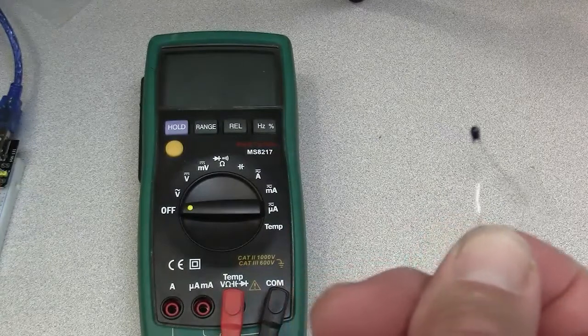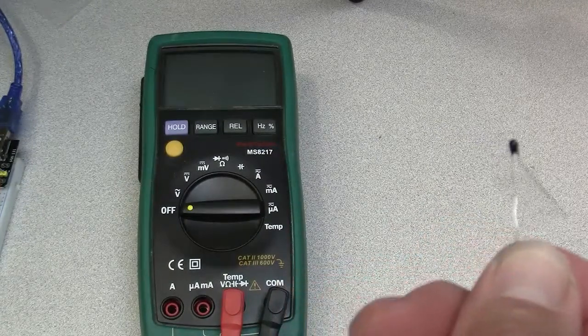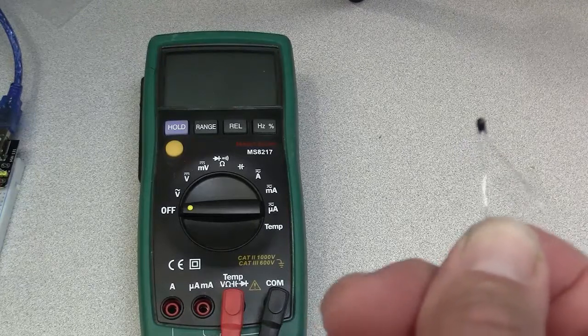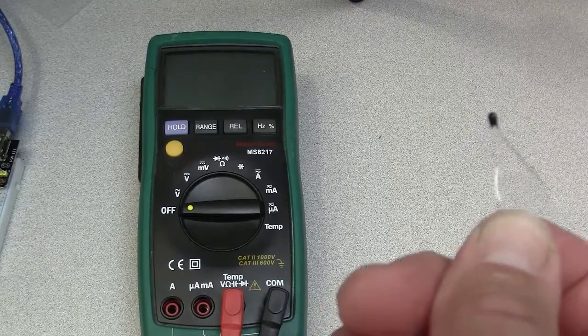This sensor is called a negative temperature coefficient or NTC thermistor. That just means that the thermistor resistance goes down as the temperature increases.